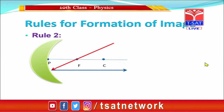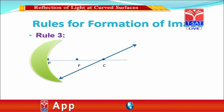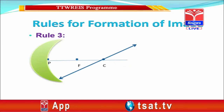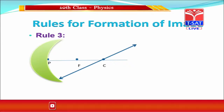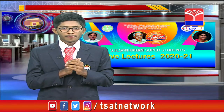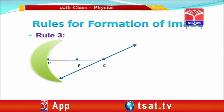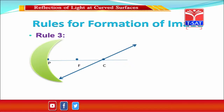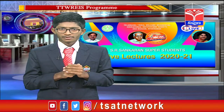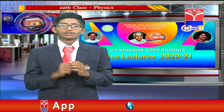Rule three is when a ray passes through the center of curvature, it will pass back in the same direction through the center of curvature. Do you know why? Let's go into the mathematics. If you draw a tangent to the curve where the ray is incident, each piece of that curved mirror appears to be a plane mirror. When the angle of incidence is 90 degrees, the angle of reflection is 0 degrees — it moves in a straight way. That's why the ray moves back through the center of curvature. These are the three rules used in the formation of images.